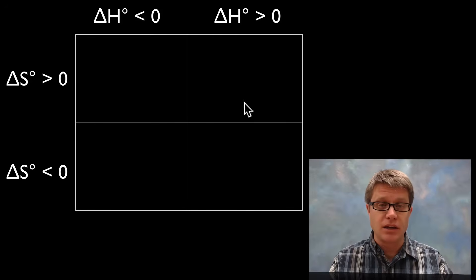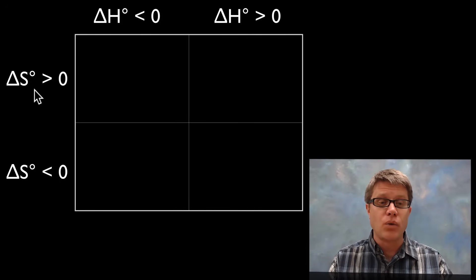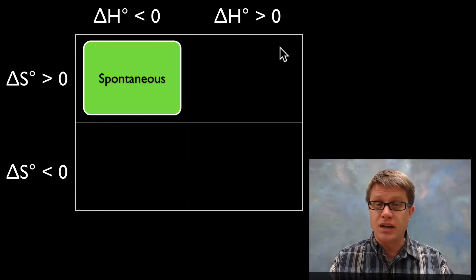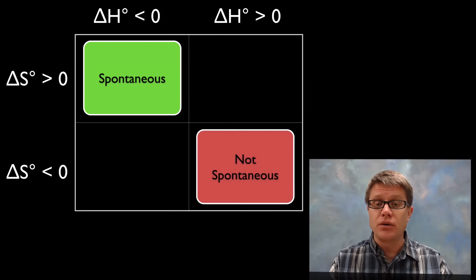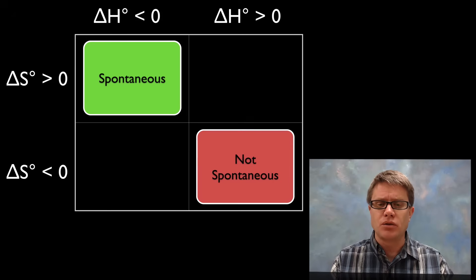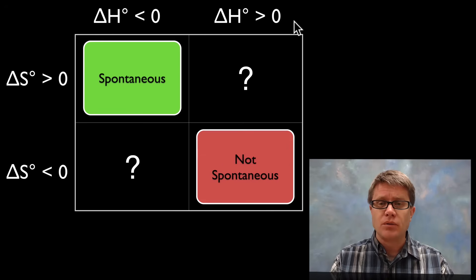We can put this on a grid. If we ever have a decrease in enthalpy — an exothermic reaction — or an increase in entropy, we know immediately it's going to be a spontaneous reaction. Likewise, if we have an increase in enthalpy and a decrease in entropy, that's going to be non-spontaneous. The reverse of non-spontaneous is automatically spontaneous. But what about the other two cases — for example, an endothermic process where entropy is actually increasing, or vice versa?